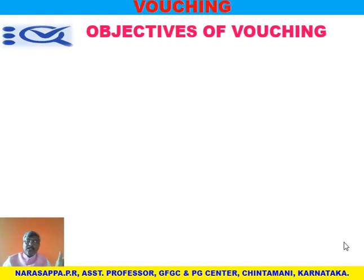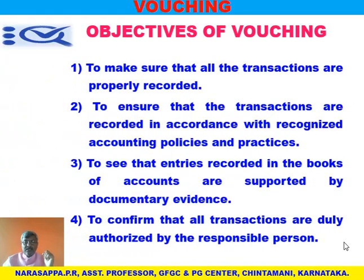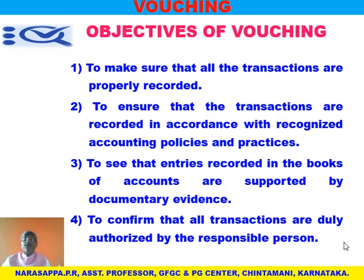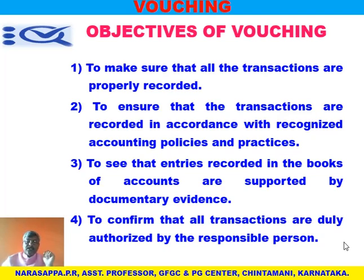What are the objectives of vouching — why do we check entries along with documentary evidences? First, to make sure that all the transactions are properly recorded. Second, to ensure that the transactions are recorded in accordance with recognized accounting policies and practices. We have Generally Accepted Accounting Principles, Indian Accounting Standards, and International Accounting Standards. Certain books of accounts are to be maintained as per the law — for example, the Companies Act of 1956 (now amended in 2013) specifies how a company's books should be recorded. Whether these policies and practices are followed is checked by vouching.